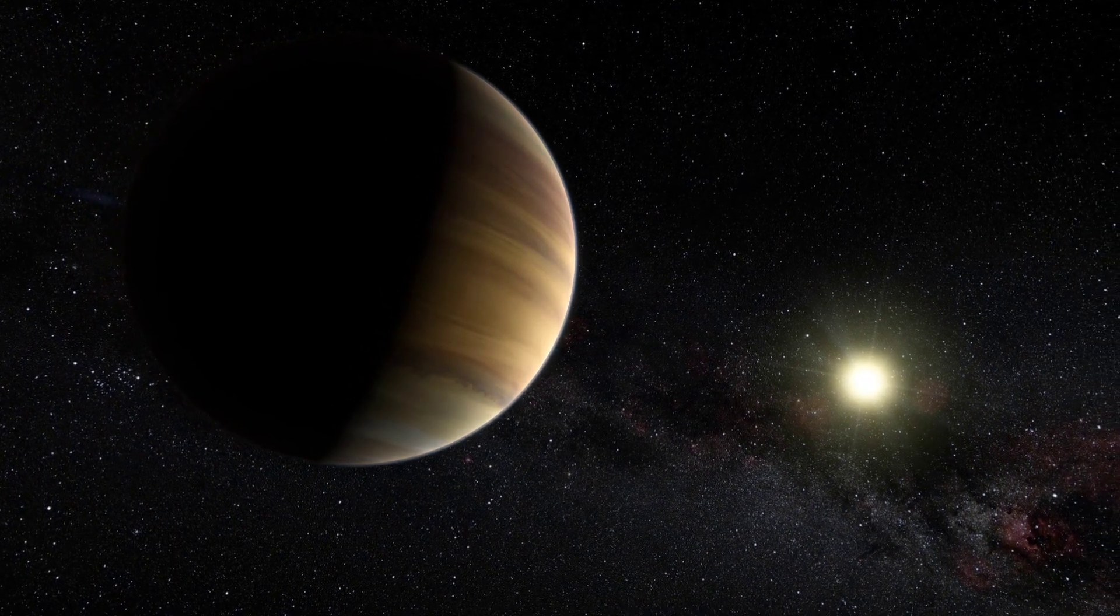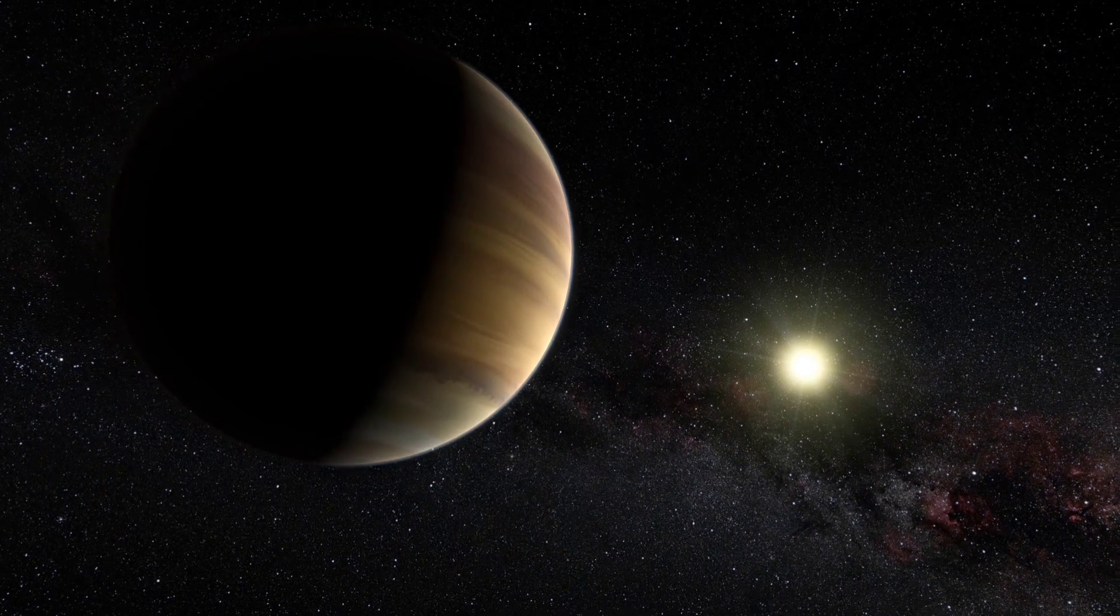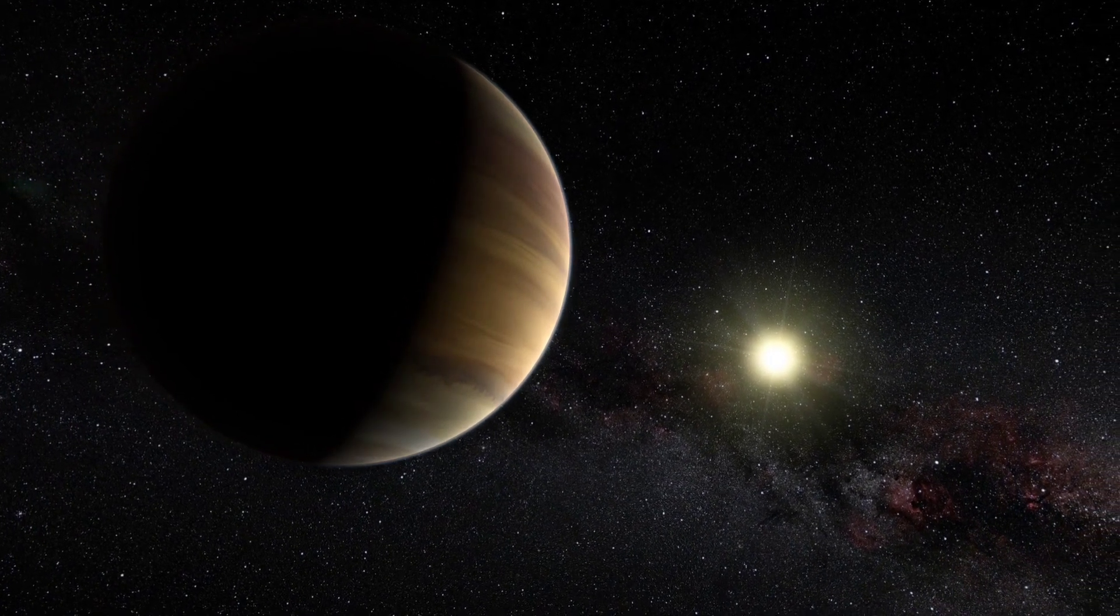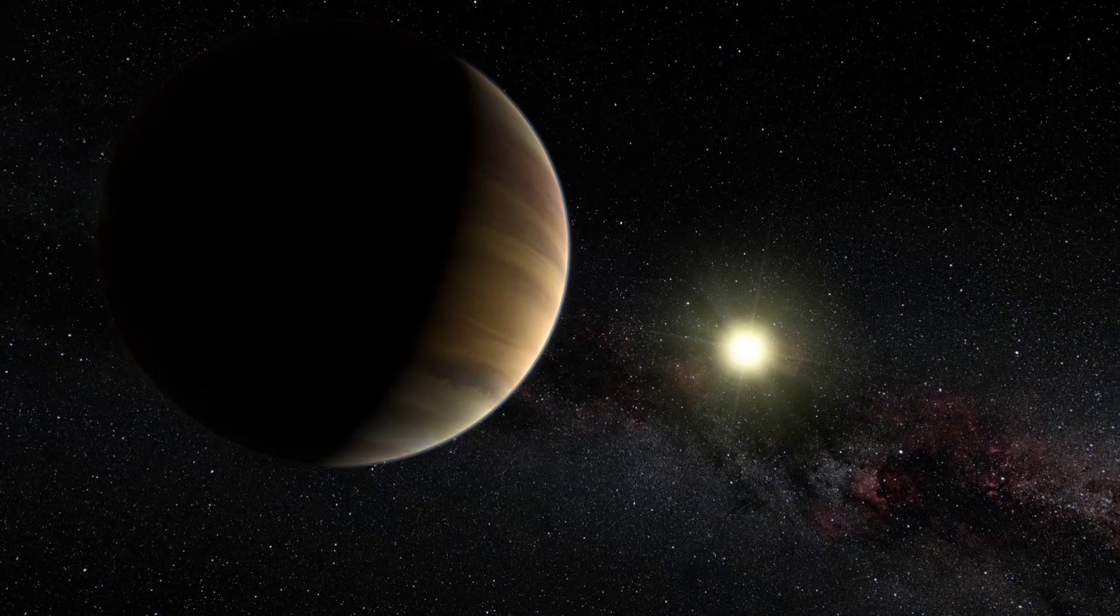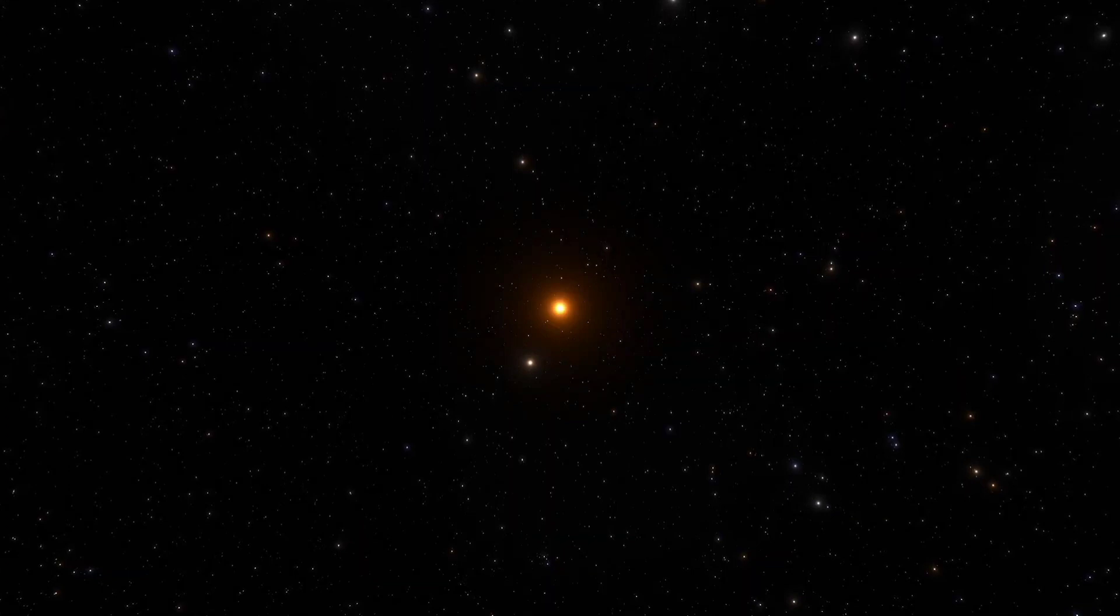A planet that simply should not be there. The planet in question is known as LHS 3154b, a planet that's only 51 light-years away and 13 times as massive as our own planet. In other words, roughly the same size as Neptune. However, the star that it orbits is absolutely tiny. We're talking nine times as small as our own sun. Now, that sort of ratio is bizarre indeed.